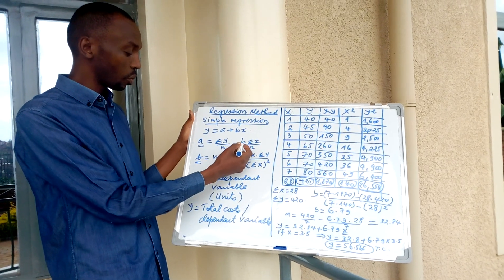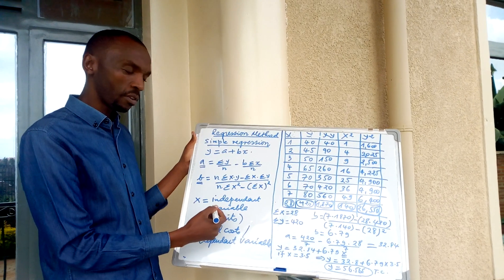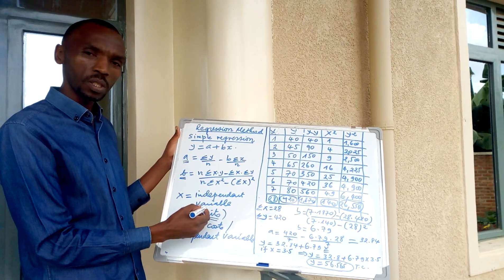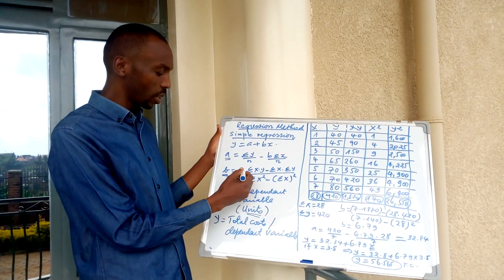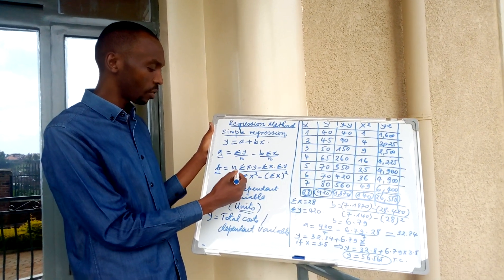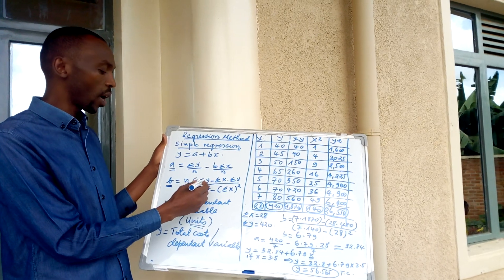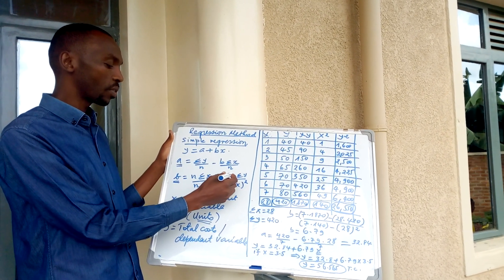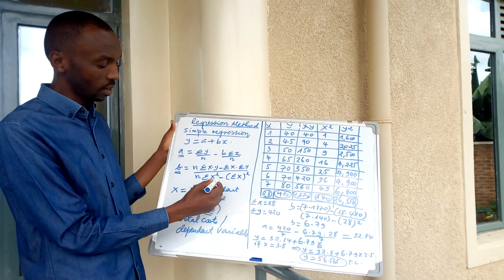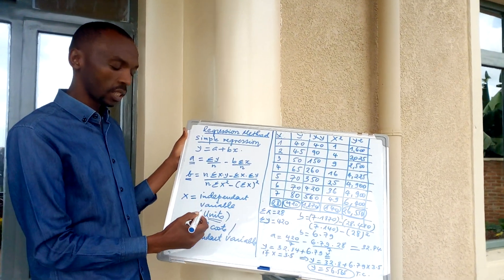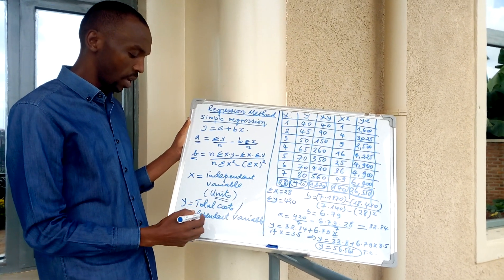The x is our independent variable, which represents the number of units we want to produce or serve. Then b will be determined based on n, the number of periods of observation. The formula is: n times the summation of xy, minus the summation of x times the summation of y, all divided by n times the summation of x squared, minus the summation of x, squared. X is the independent variable and y is the total cost.